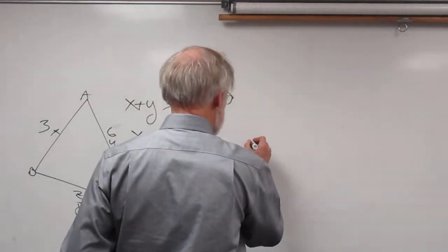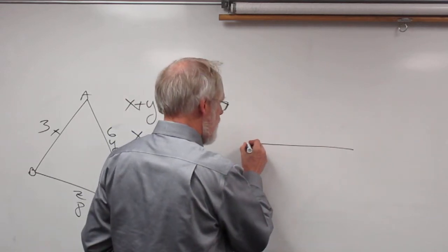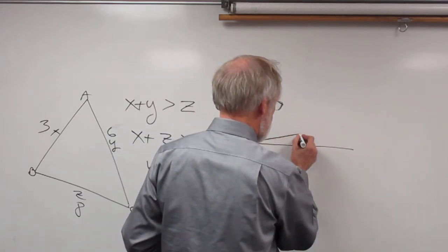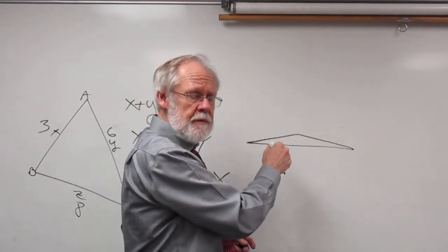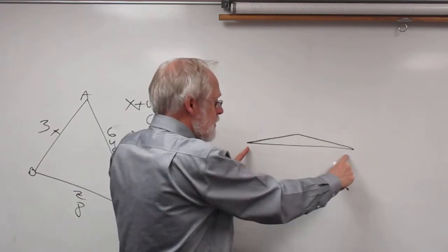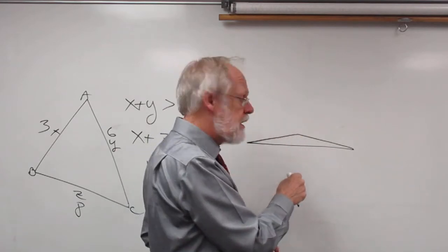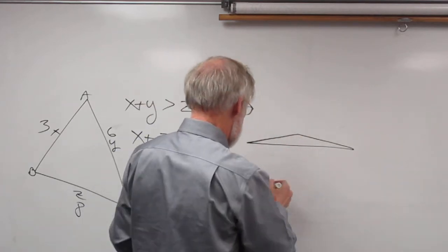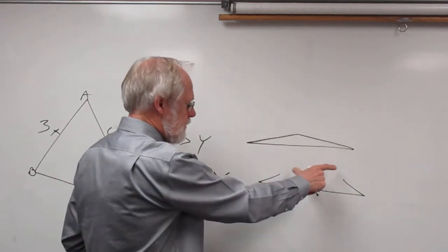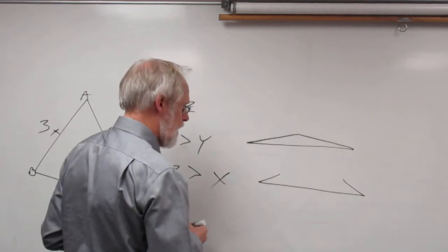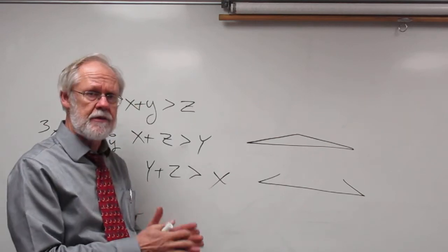What happens is, if you have a base like this, the other two sides together have to be greater than the length of that base, because together they have to rise up above the base. If they are the same length, they don't have enough length to rise above the base and you don't have a triangle. And if they're less, they're not going to rise up far enough to make a triangle. So any two sides of a triangle have to be greater than the length of the third side.